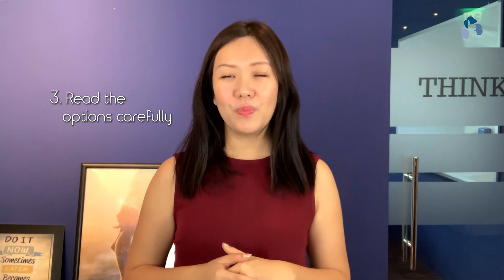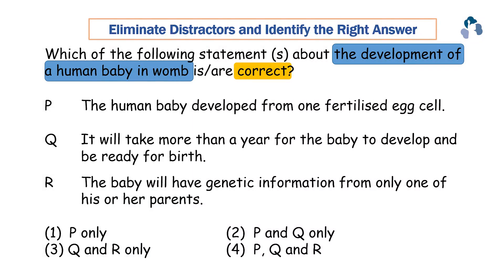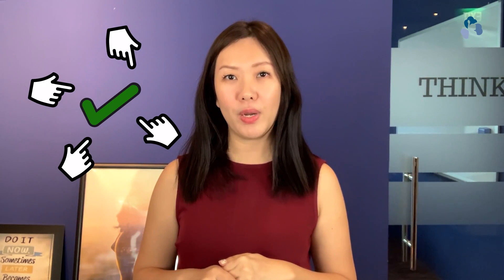Third strategy: now it is time to look at the options. Read the options very carefully. There is only just one correct answer and three distractors. Using the first strategy whereby you already identified the key information, that would point you to the direction of the correct answer.